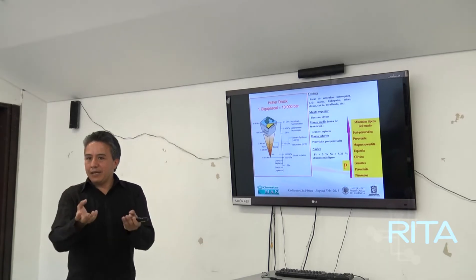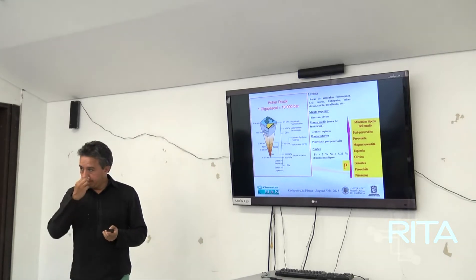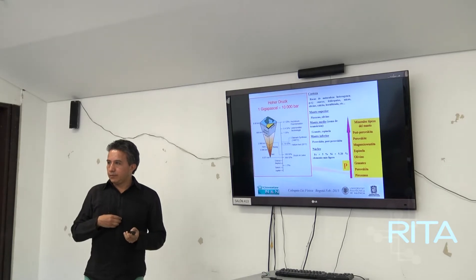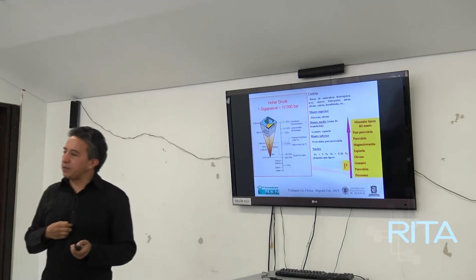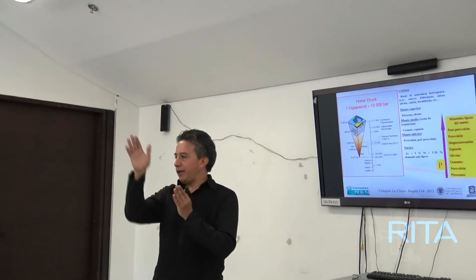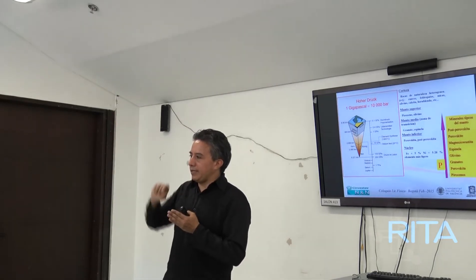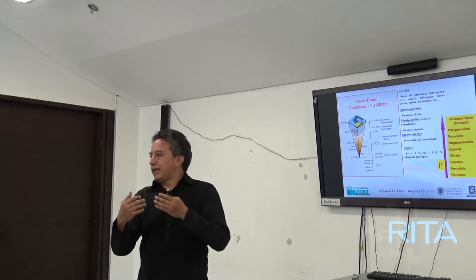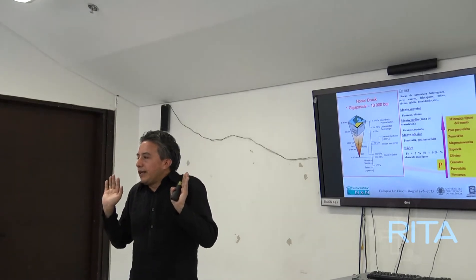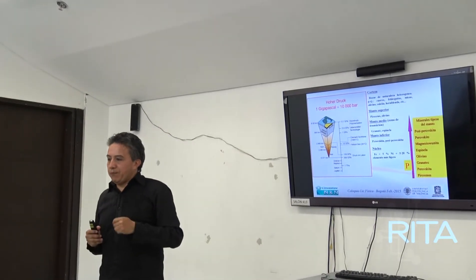Un ejemplo podría ser la industria de los televisores o pantallas de computador. Las pantallas tienen que ser hechas a partir de materiales que van a emitir cada color. Las propiedades ópticas: las pantallas de televisor aprovechan ciertas propiedades de la luz, de tal forma que pueden reflejar o generar una reflexión que genera un pixel en la imagen. El material tiene propiedades ópticas muy altas. Hay demasiados materiales disponibles, pero el problema es que no se sabe qué se puede hacer con ellos.